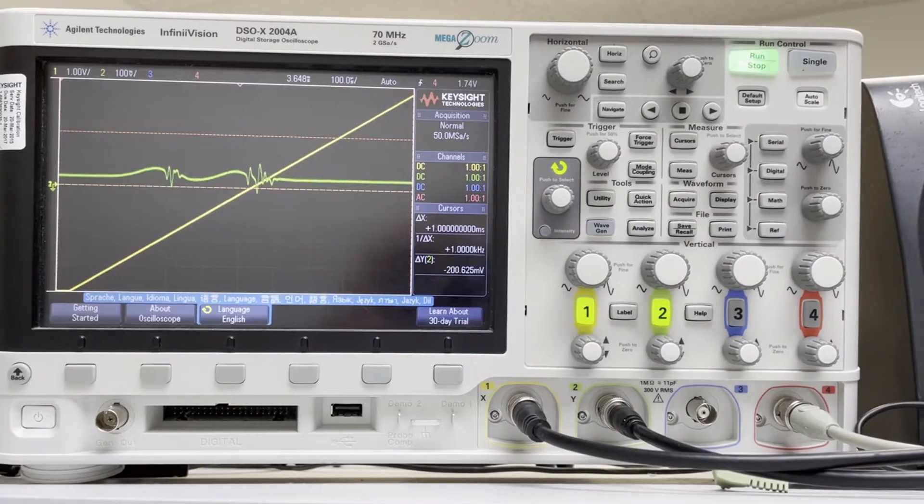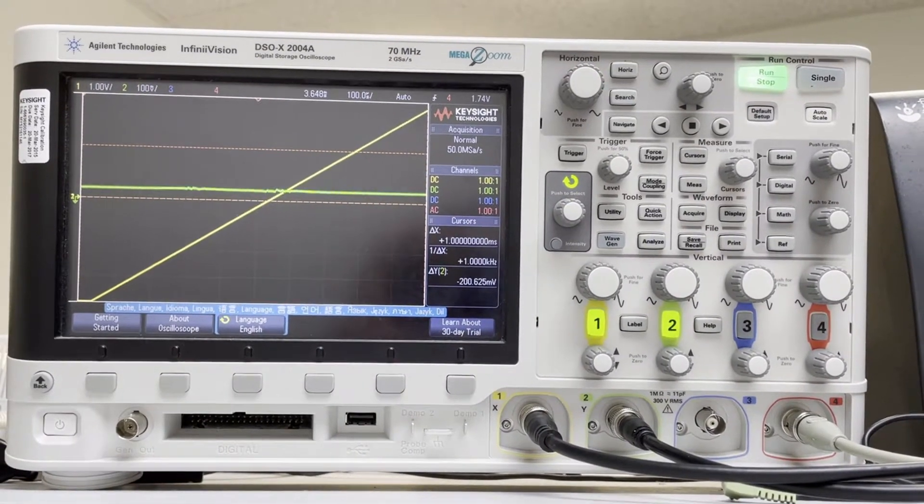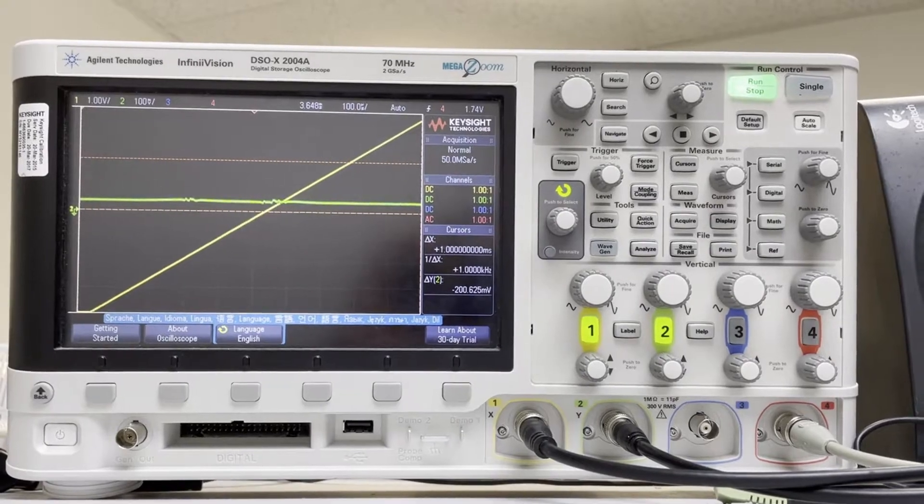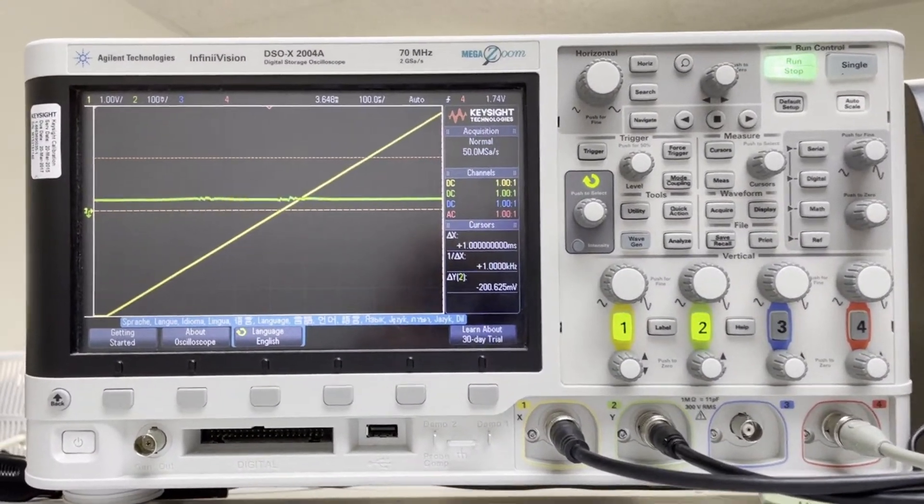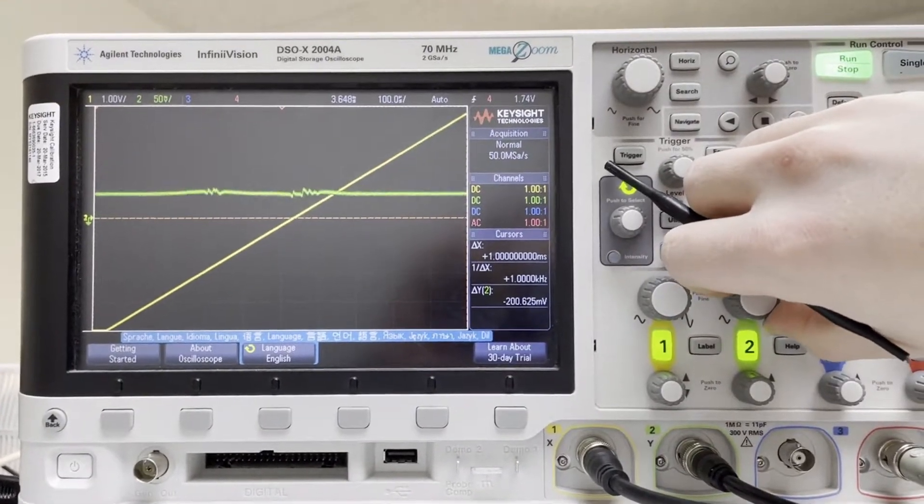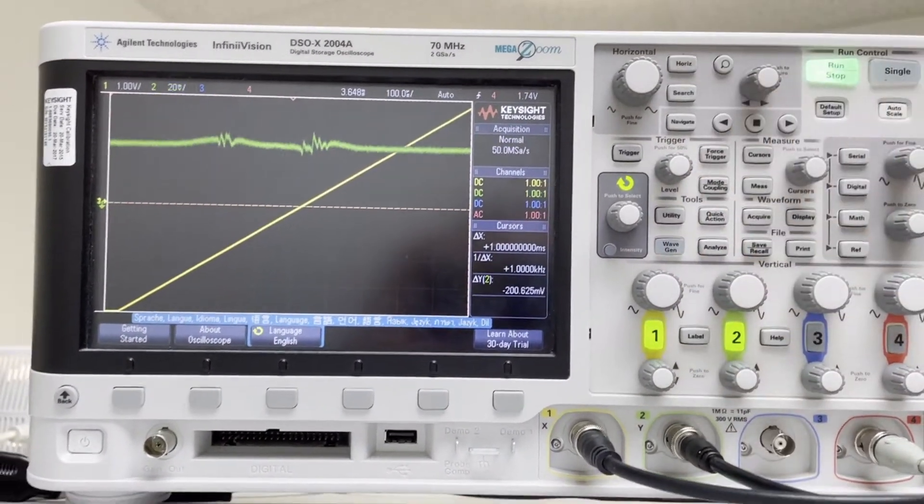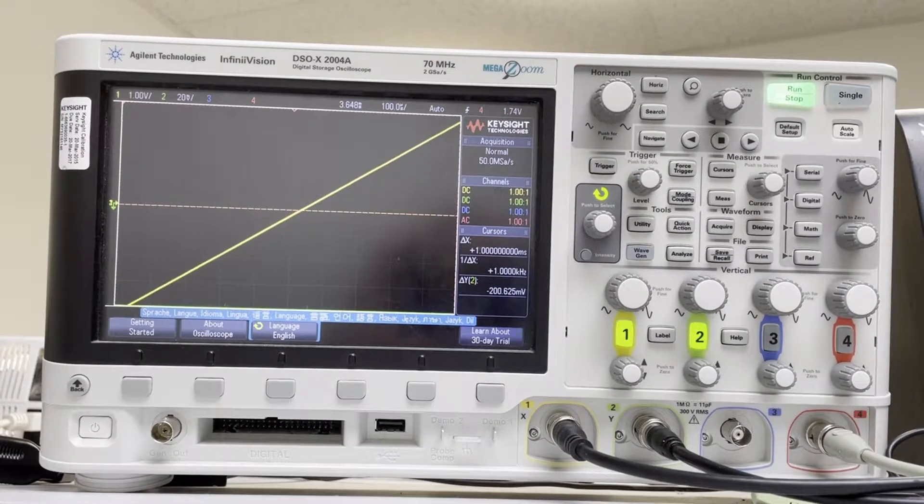But since we are trying to get an offset phase lock, what I'm going to do is turn the dither as far down as I can and still see the feature I want to lock to. We can zoom in on our oscilloscope here and see those features a little better.